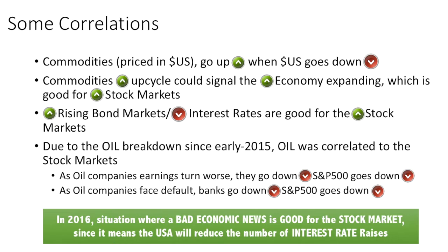To recap: commodities are priced in US dollars and tend to go up when the US dollar goes down. When oil goes up and gold goes up, the US dollar goes down. Since the Canadian dollar — the loonie — is positively correlated to oil, when oil goes up the loonie goes up. So whenever oil goes up, you want to sell the USD/CAD pair.